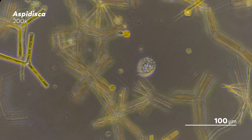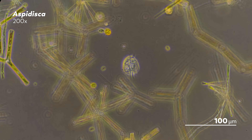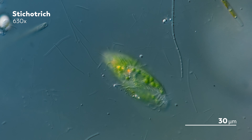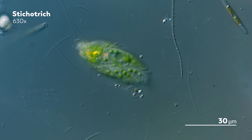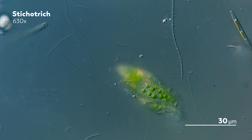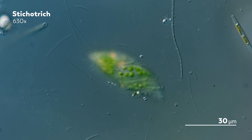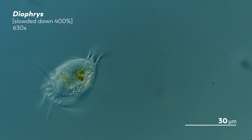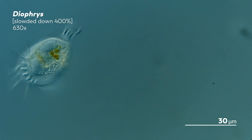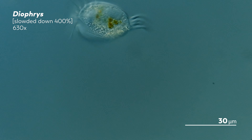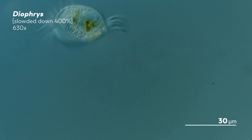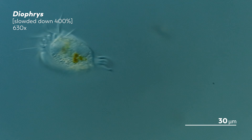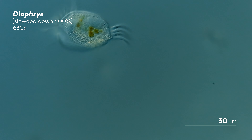But there are some genera that make it easier on us. For example, this Stichotricha has a really distinct look, thanks to its shape and the spiral of cirri traveling down it. And then there's this Diophrys, which has — well — it has a hairy butt. And that makes it pretty easy to identify. It's also very fast; we actually had to record this in slow motion to be able to show it to you.